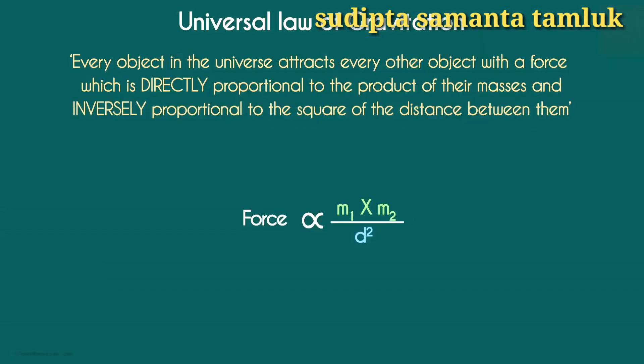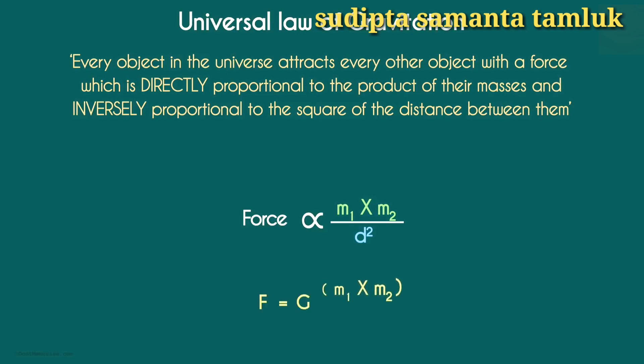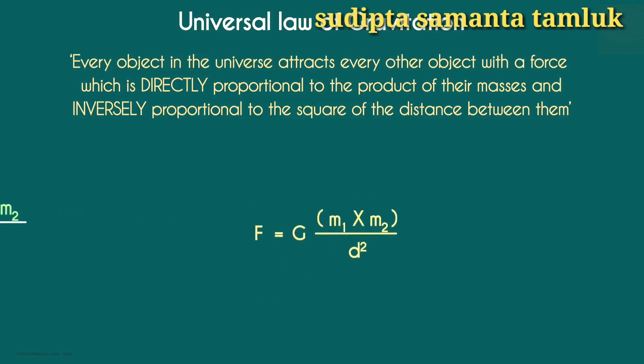So, if the mass of any of the objects increases, the gravitational force will have more magnitude. And the more the distance between the two objects, the lesser will be the gravitational force. This can be written as F equals G times m1 times m2 over d squared.